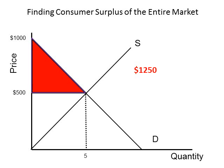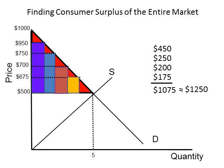Let's compare this result to our earlier calculation of consumer surplus for the four individual consumers. As you may remember, the sum of Joe's, Sally's, Judy's, and Steve's consumer surpluses adds up to $1,075, which is not too much different from $1,250. Indeed, if one takes into consideration the shaded area, it is apparent that the difference between the two outcomes is largely due to the way the surpluses were calculated.